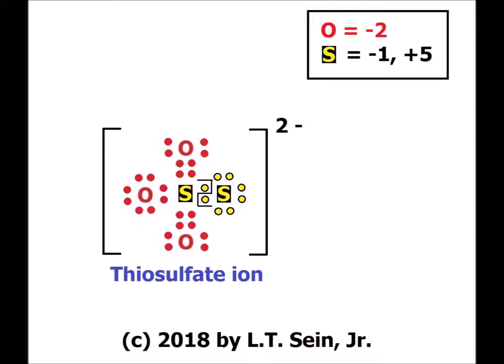Next we have the thiosulfate ion, which we can think of as starting with sulfate and replacing one oxygen atom with sulfur. Here the two sulfur atoms have different oxidation numbers. The leftmost sulfur has only one electron — one from the S−S bond is counted to it — so starting from 6 it has an oxidation number of +5. The sulfur atom on the right has 7 electrons, corresponding to an oxidation number of −1. Therefore the two sulfur atoms in thiosulfate ion have two different oxidation numbers: −1 and +5.